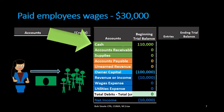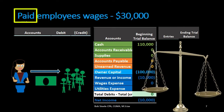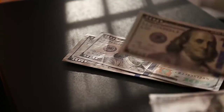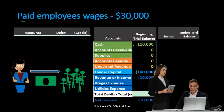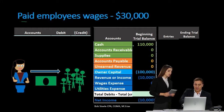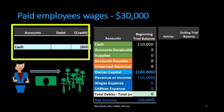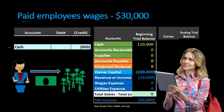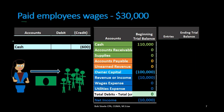Next transaction: paid employee wages of 30,000. First question — is cash affected? Yes. Is it going up or down? It's going down. Keyword: 'paid' — when we say paid, we usually mean paid with cash, so cash is decreasing. To make cash go down, we do the opposite of its normal balance — its normal balance is a debit, so we do a credit. I'm leaving a space on top since credits typically go on the bottom by convention.